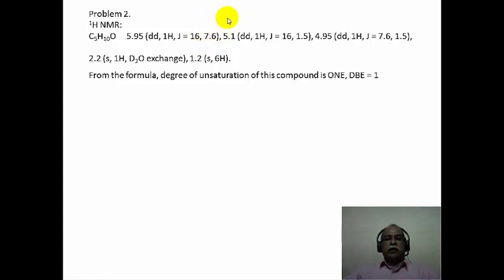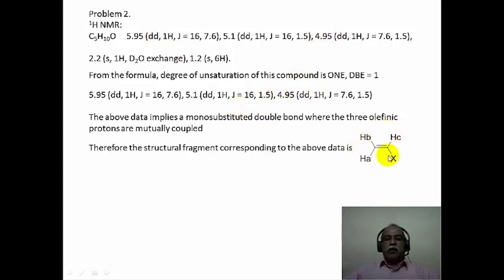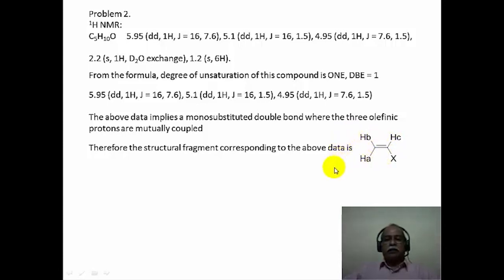So from the data of 5.95, 5.1, and 4.95 taken together, it implies only a mono-substituted olefinic derivative, where you will have a trans coupling, a cis coupling, and a geminal coupling corresponding to 16 Hz, 7.6 Hz, and 1.5 Hz respectively. The 1.5 Hz small coupling corresponds to the SP2 geminal hydrogen coupling, which is the smallest among the three coupling constants in this particular fragment.